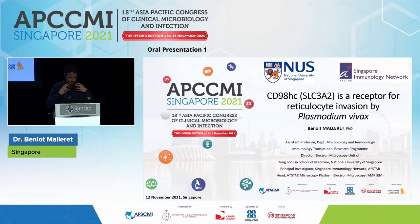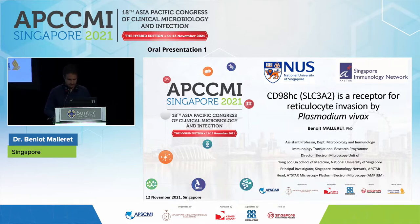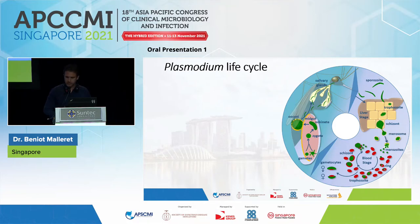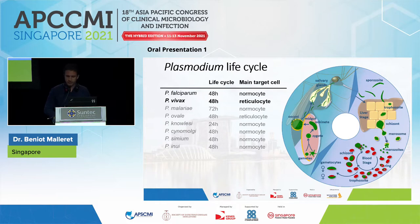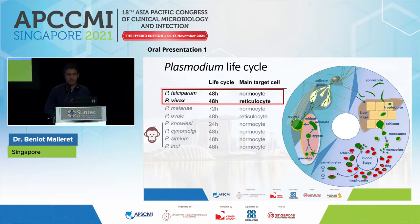Thank you for the introduction. I would like to thank the organizers for giving me the opportunity to present my work on Plasmodium vivax and a new receptor. Today I will focus only on the blood stage of Plasmodium vivax. There are currently eight different species that can affect humans, but the two main ones are Plasmodium falciparum and Plasmodium vivax. The main difference is that P. falciparum can infect normal red blood cells, while P. vivax can only infect reticulocytes.